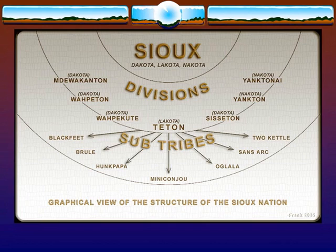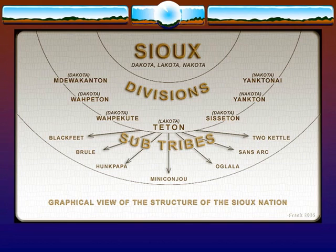If you go down a division, you have the Teton, the Sisseton, the Yankton, the Yanktonai — and each one of those subgroups comprises tens of thousands of individuals. Drill down one step further: the Teton is subdivided into the Blackfoot, Brule, Hunkpapa, Miniconjou, Oglala, Sans Arc, and Two Kettle. Each one of these is made up of bands of hundreds of individuals. So hundreds of bands make up the Miniconjou, make up the Oglala, make up the Teton — tens of thousands — which makes up the Lakota. This is a huge structure.